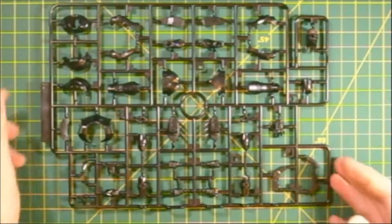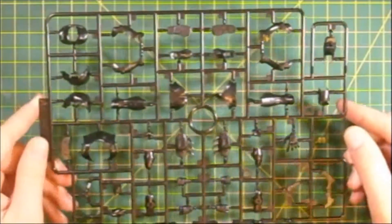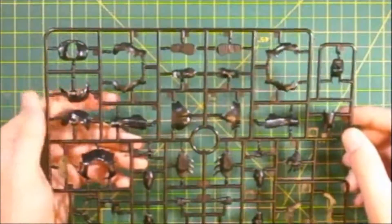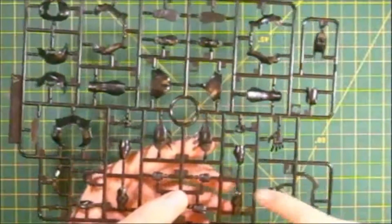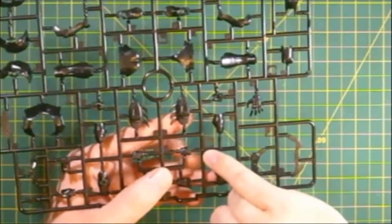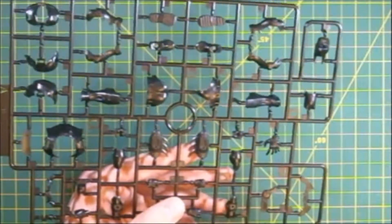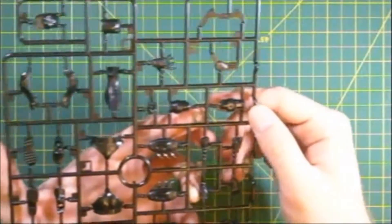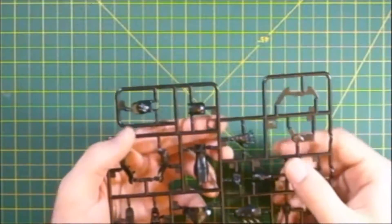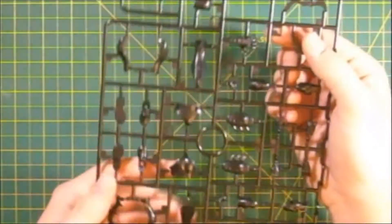And to take a closer look at our runners here, starting off with the A runner here, this is gonna have all of our black pieces that we need for the entire kit. One nice thing that you'll notice about sprue kits is how a lot of the pieces in the sections actually have these little indicator symbols right here, indicating where or what section of the kit you're gonna be building.